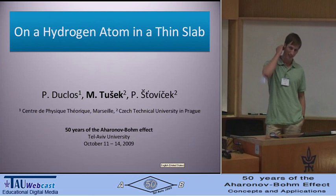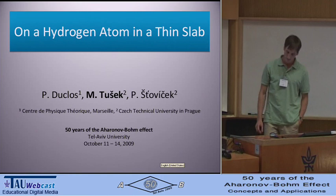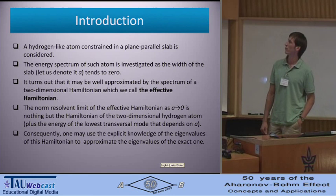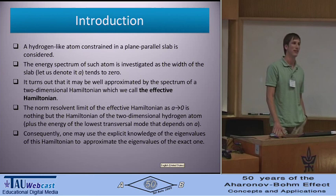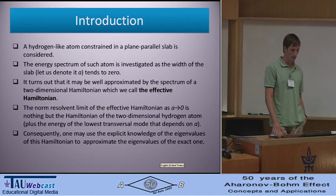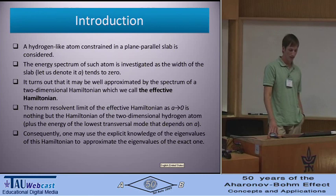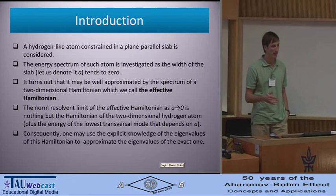Now let's turn to the topic itself. We deal with the hydrogen-like atom constrained in a plane-parallel slab, and we investigate the energy spectrum of such an atom as the width of the slab tends to zero. It turns out that this Hamiltonian may be well approximated by a two-dimensional Hamiltonian, which we call the effective Hamiltonian.